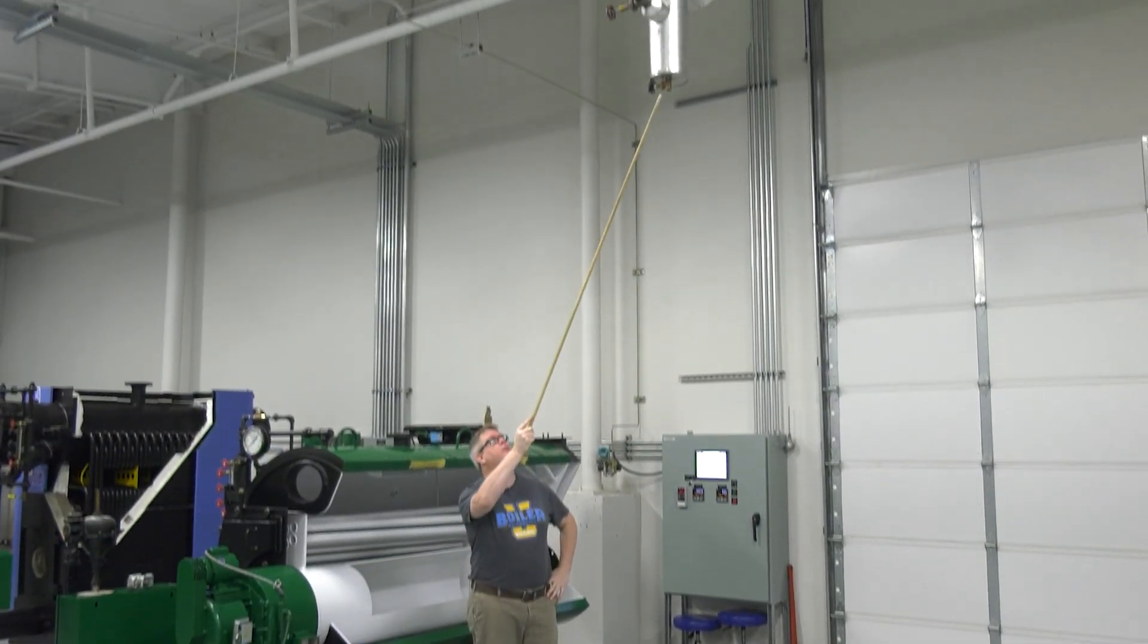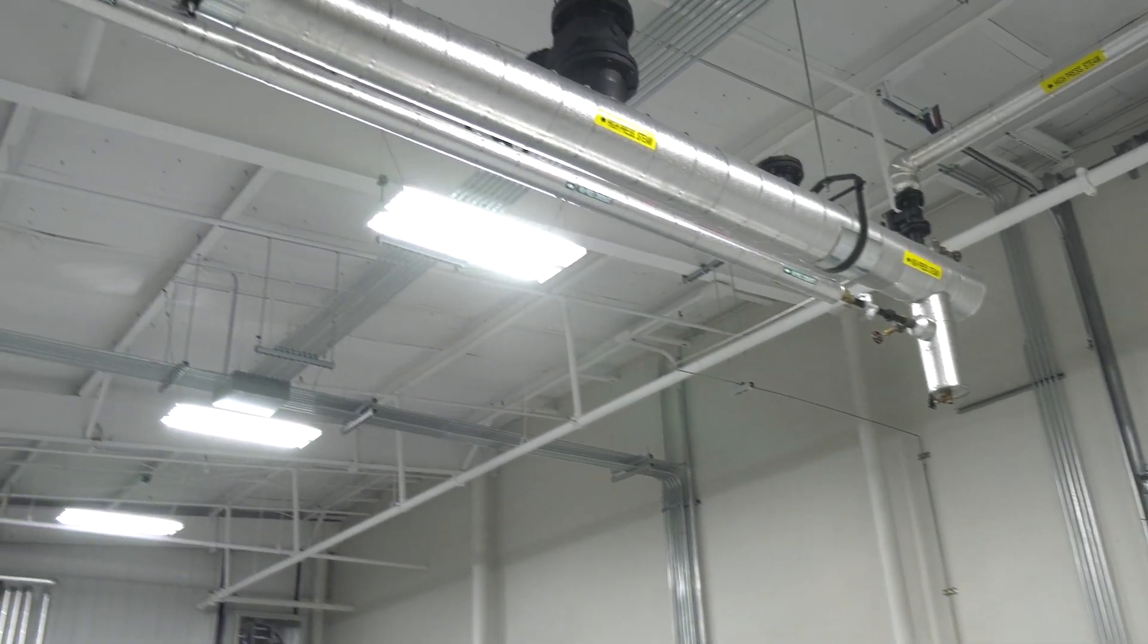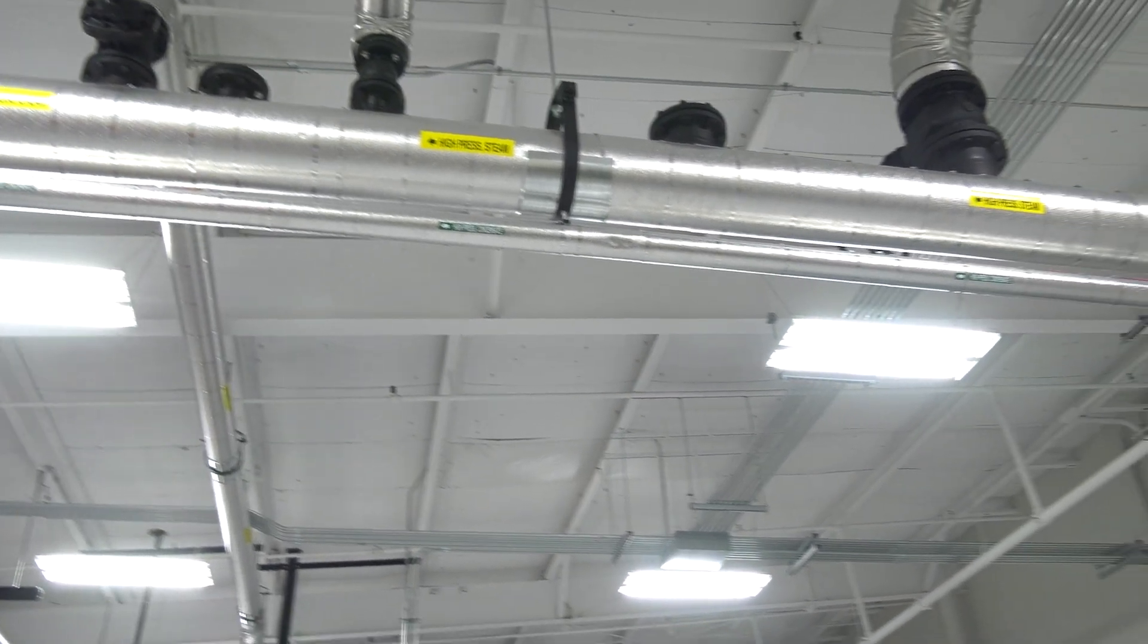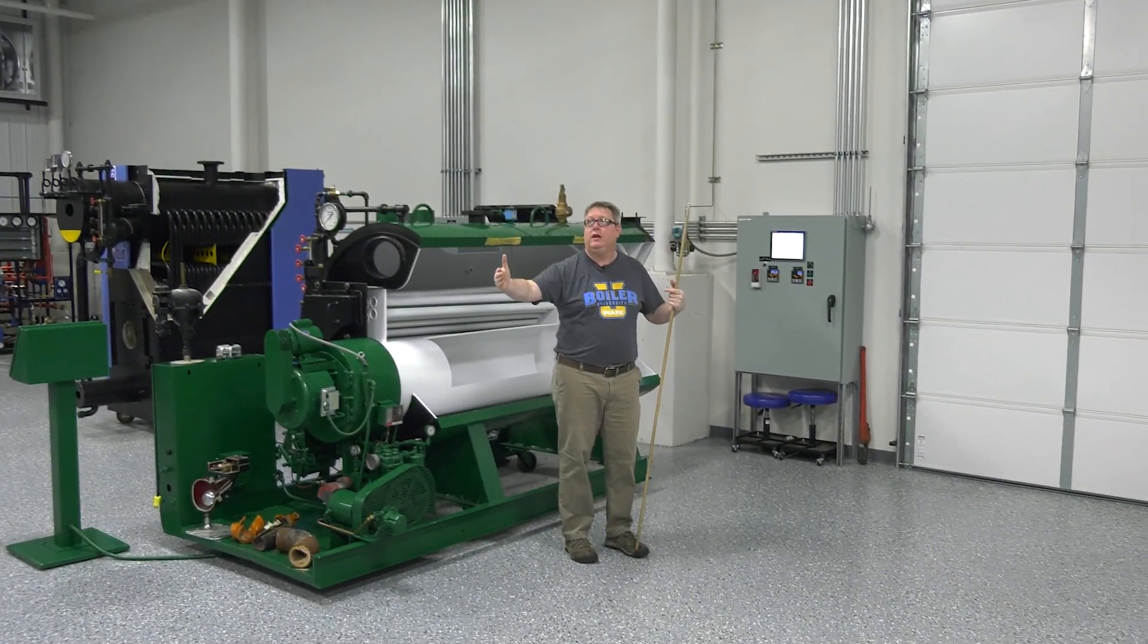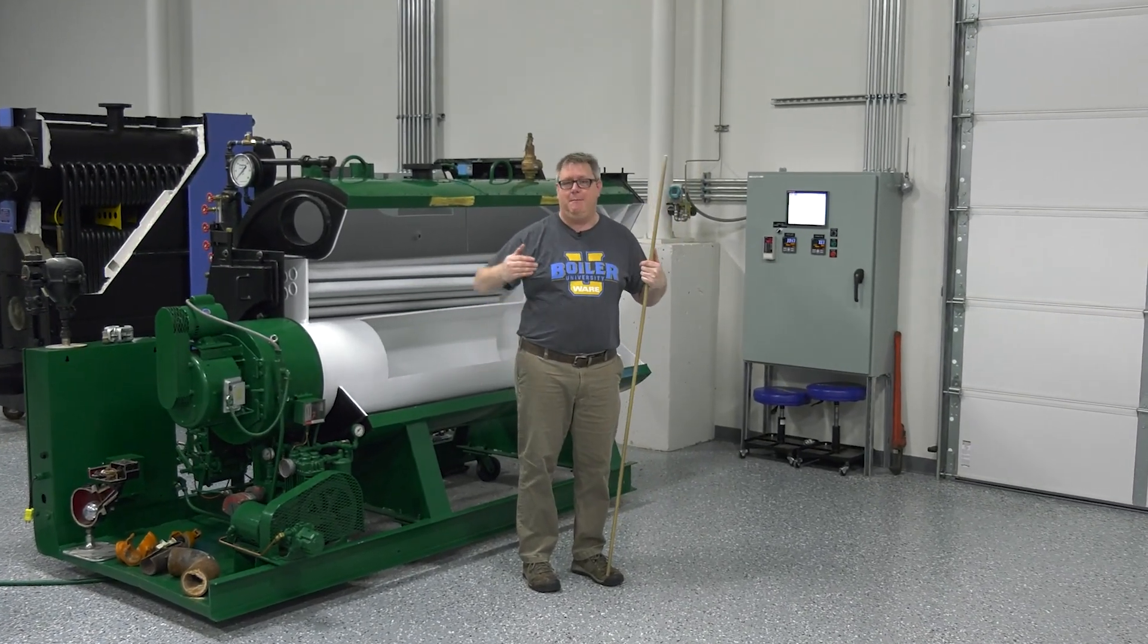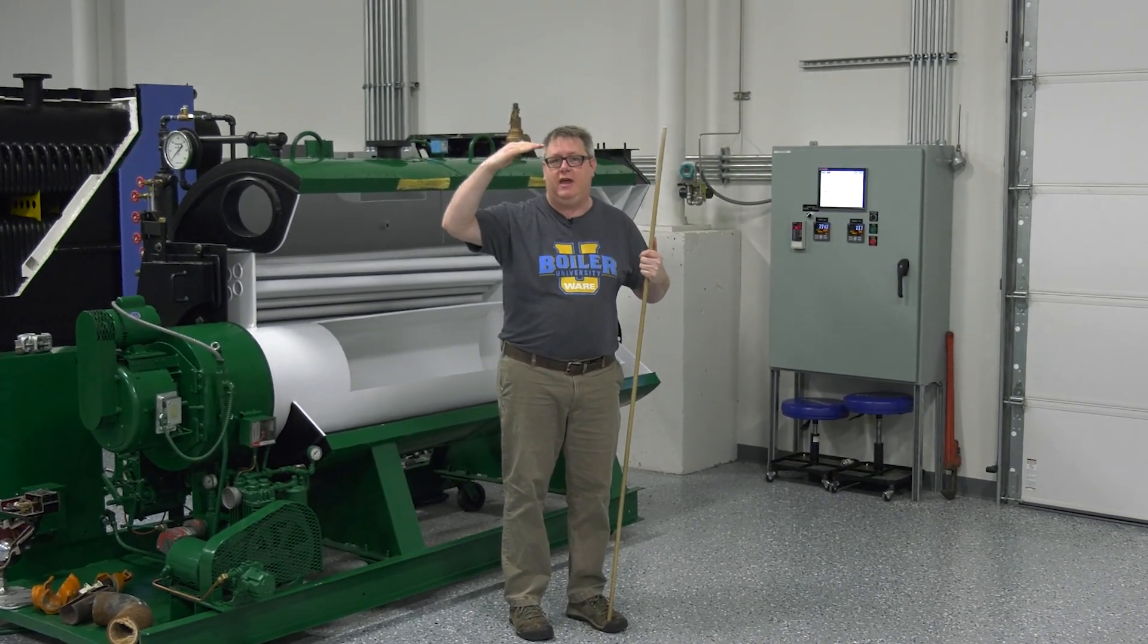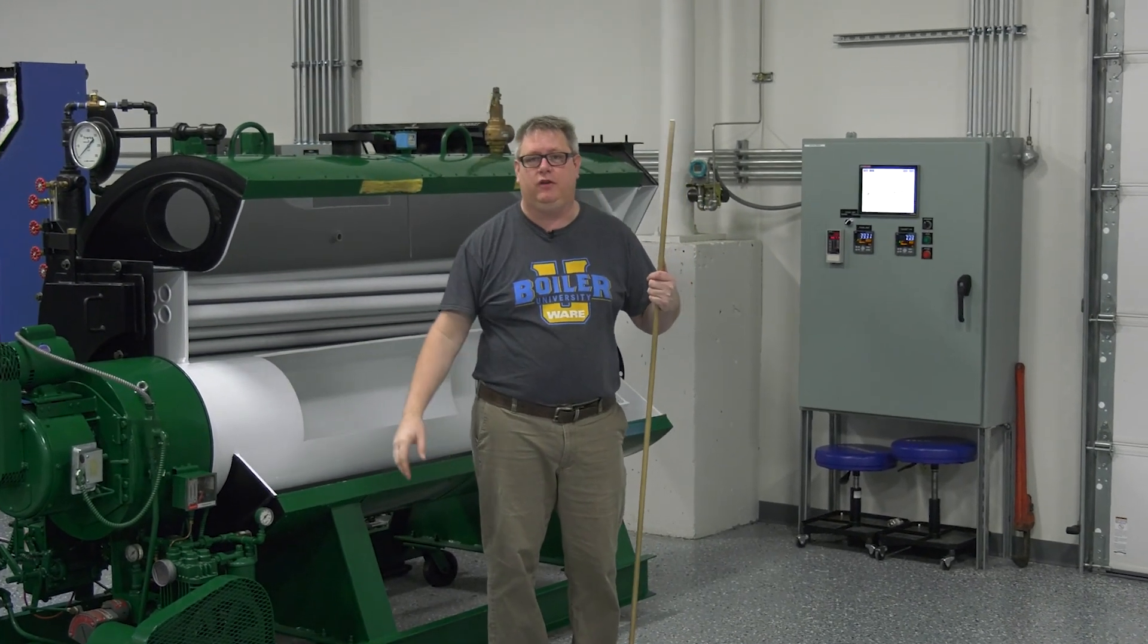Let's look at a couple other places where we've got drip legs on this system. In our steam distribution system, we're going to have a drip leg anywhere that condensate could accumulate. Basically on a header, we're going to have a drip leg on each end because the steam could travel in either direction. Without those drip legs, that header will flood with condensate until we start sucking condensate out in the pipe going to our points of use.